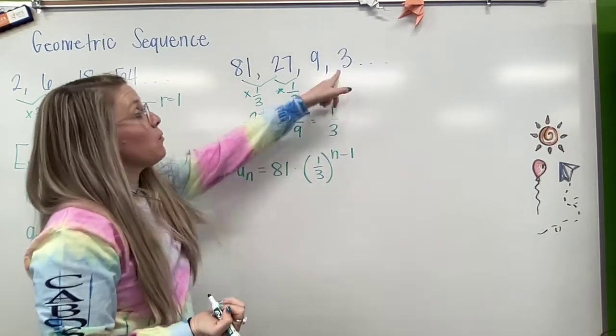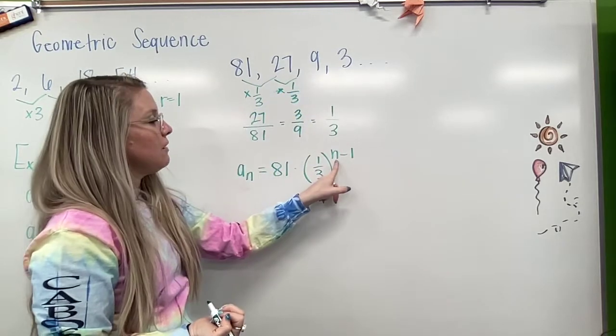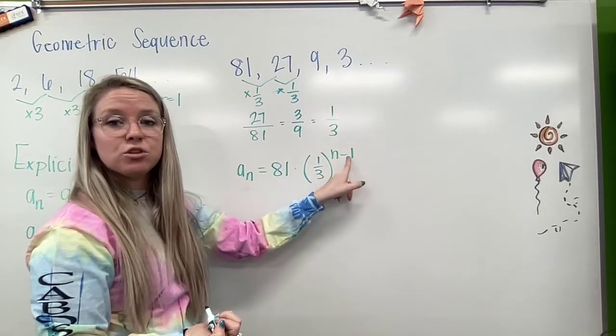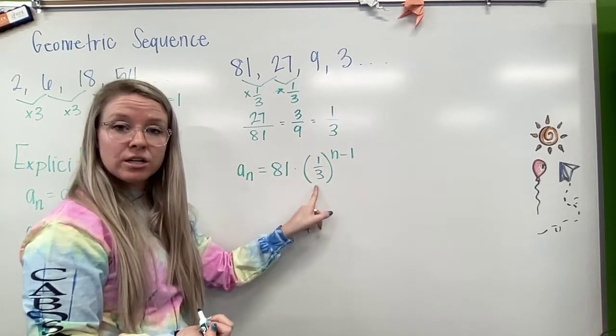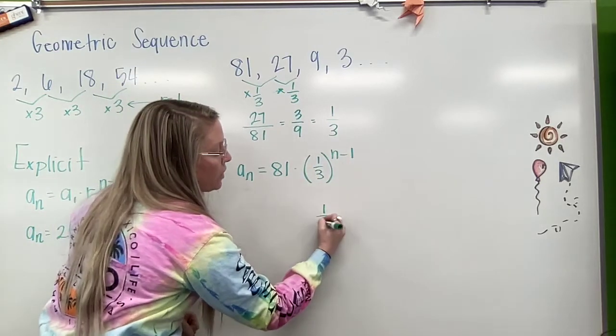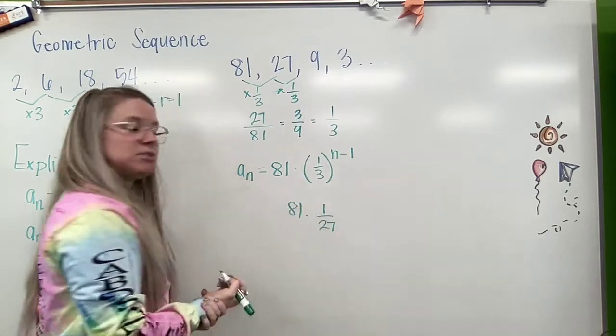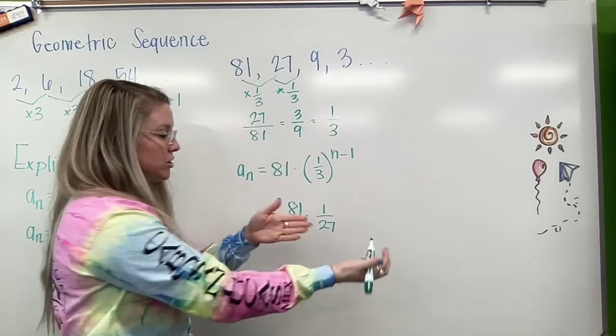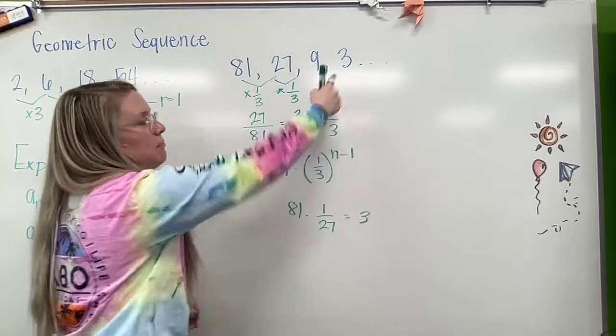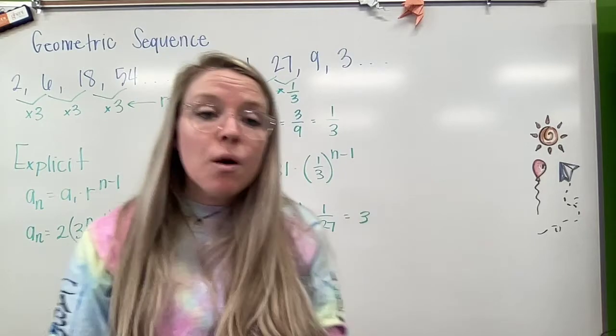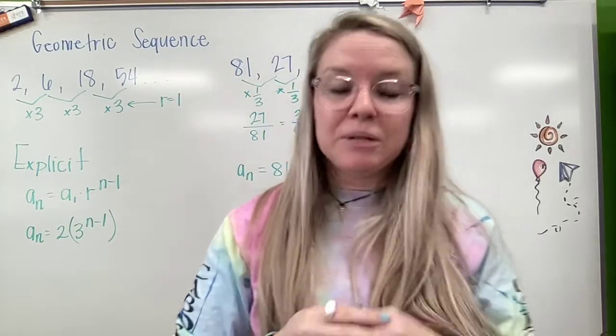So again, if I want the fourth step, I'm going to get 4 minus 1, which is 3. 1 third, when I cube it, becomes 1 over 27 times 81. Then I reduce that out and I'm going to get my 3. So geometric is always multiplication.